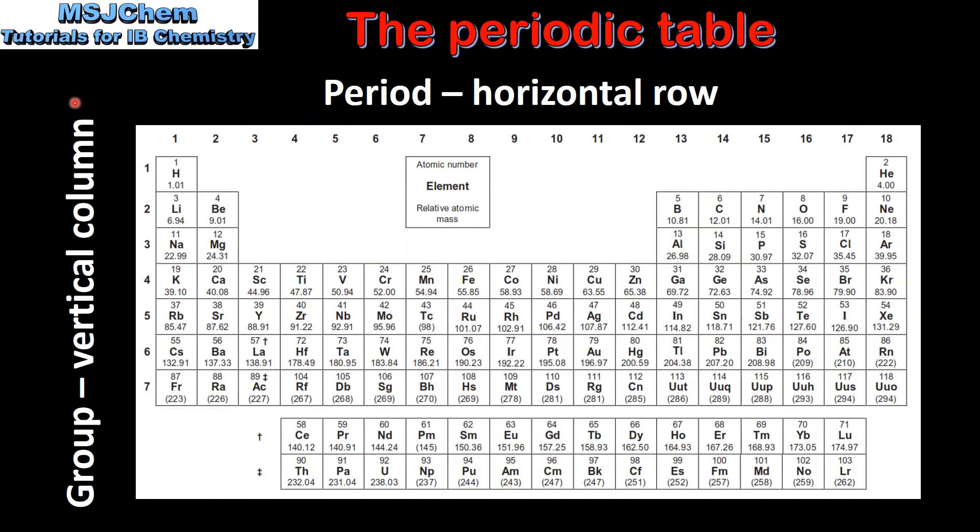Next we look at groups and periods in the periodic table. A group is a vertical column. For example, in group 1 we have lithium, sodium, potassium, rubidium, caesium and francium. The groups in the periodic table are numbered 1 to 18.